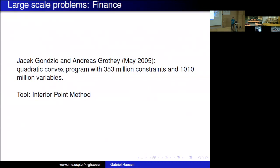In these kinds of problems you may have a very large number of variables and constraints. The record for the largest nonlinear problem solved is a quadratic convex problem on finance with 353 million constraints and 1 billion variables. This was solved in 2005 using an interior point method by Gonzi. I will show a brief introduction to interior point methods at the end of this lecture, and Gonzi's paper 'Interior Point Methods: 25 Years Later' from the European Journal of Operations Research is a good reference.